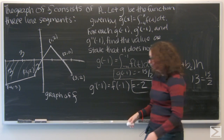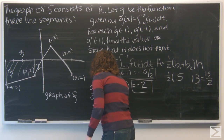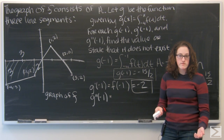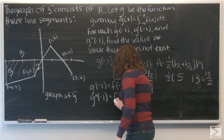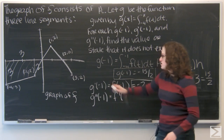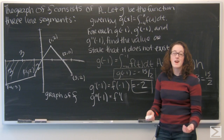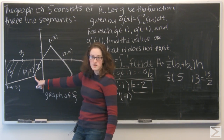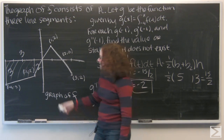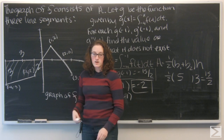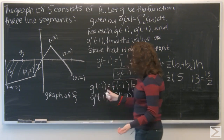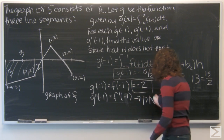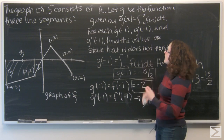Now let's look at g double prime of negative one. If g prime of x is f of x, then the second derivative of g is the first derivative of f. So I want f prime of negative one. Looking at the picture, x equals negative one is where two of the line segments meet — there's a corner point in the function right there. So f is non-differentiable at that point, which means g double prime of negative one doesn't exist. That gives me all three answers for part a.